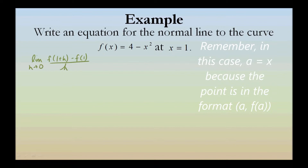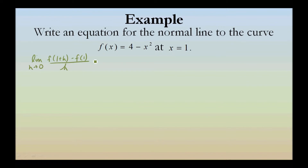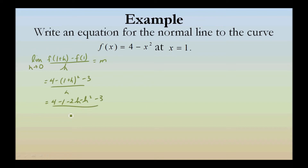The limit as h approaches 0 of this will yield us the slope, or m. So the limit of f of 1 plus h minus f of 1 over h as h approaches 0 is 4 minus 1 plus h squared minus 3 divided by h, which equals 4 minus 1 minus 2h minus h squared minus 3 divided by h.